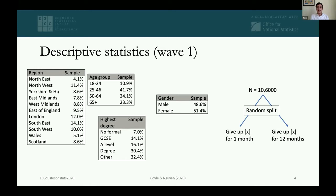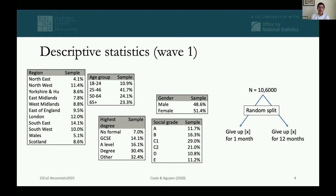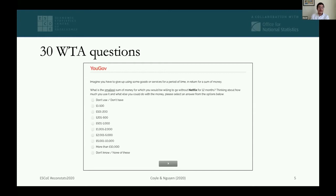We split the sample in two to vary the time period considered — one year and one month — and randomly assigned respondents to one of these two groups. We then put 30 willingness-to-accept questions to respondents. The whole survey took around 15 minutes to complete for most people.